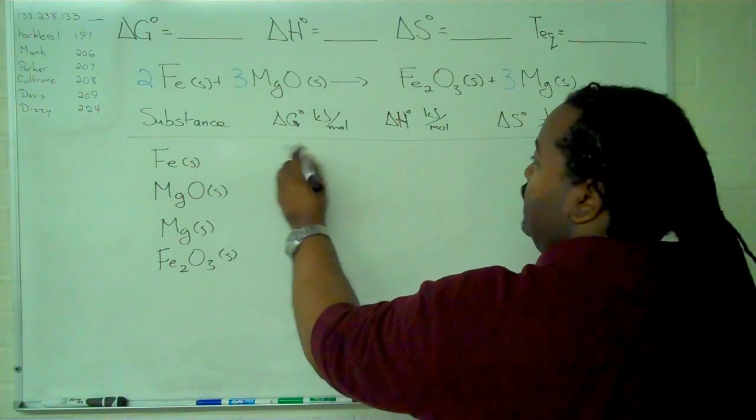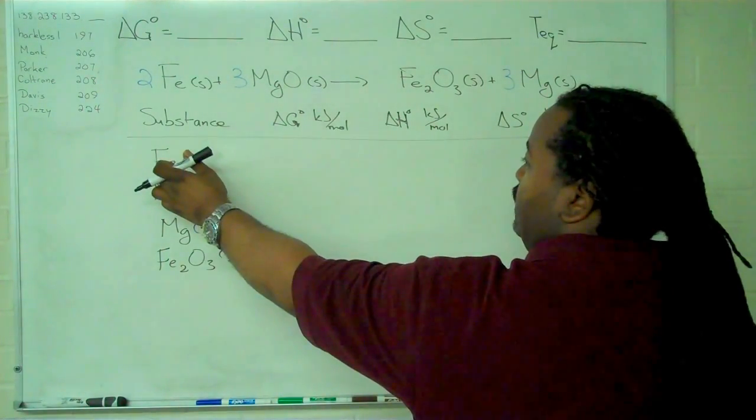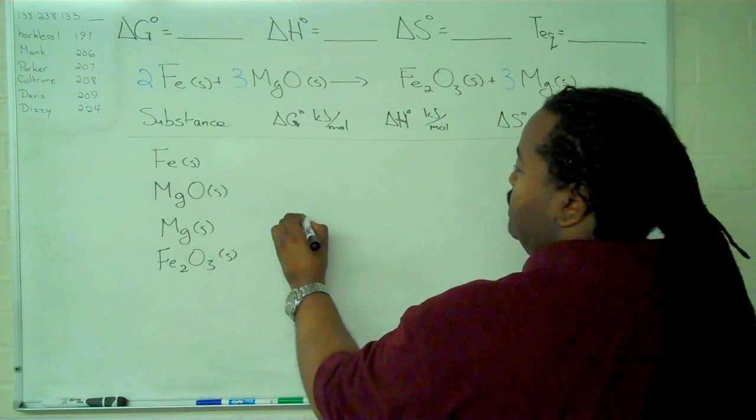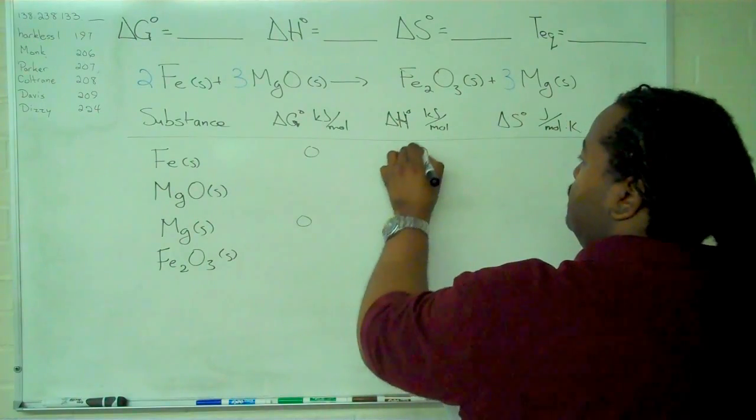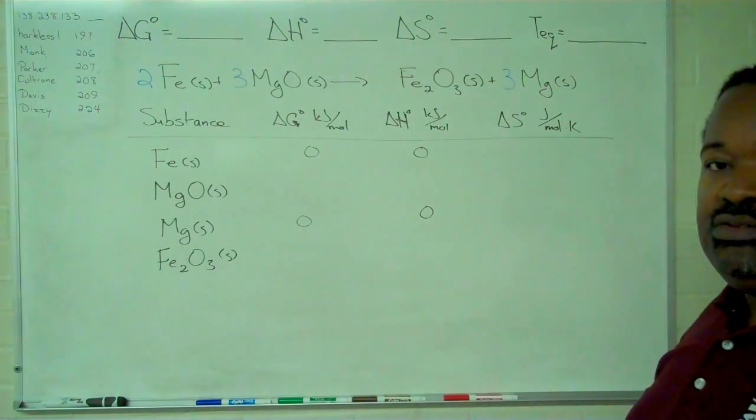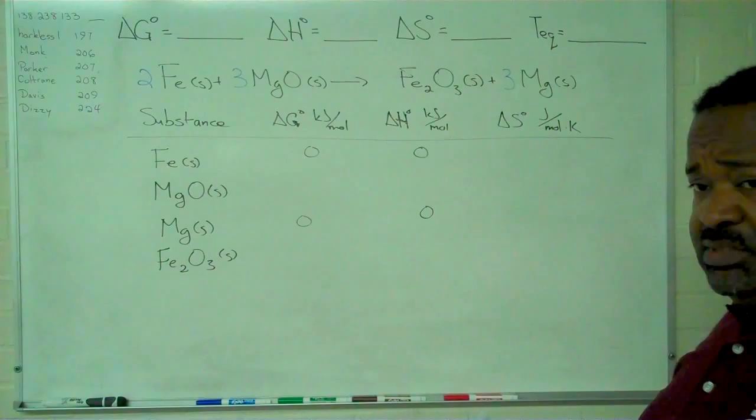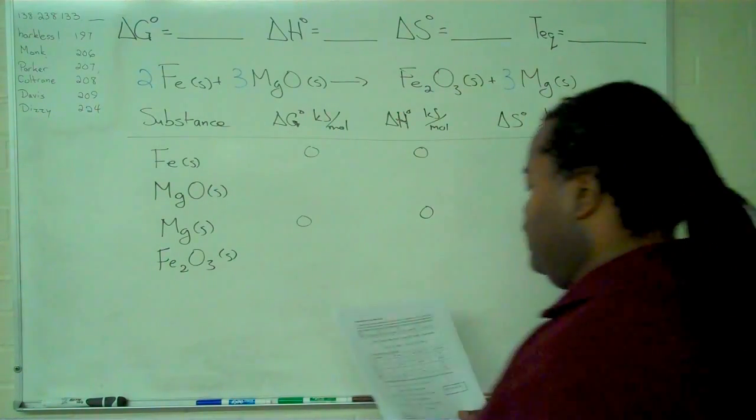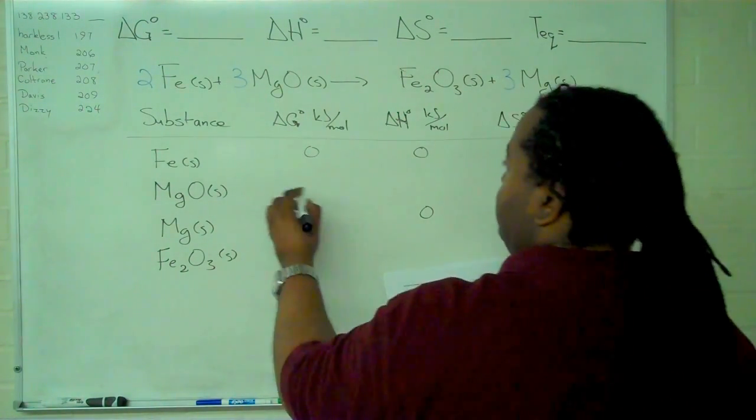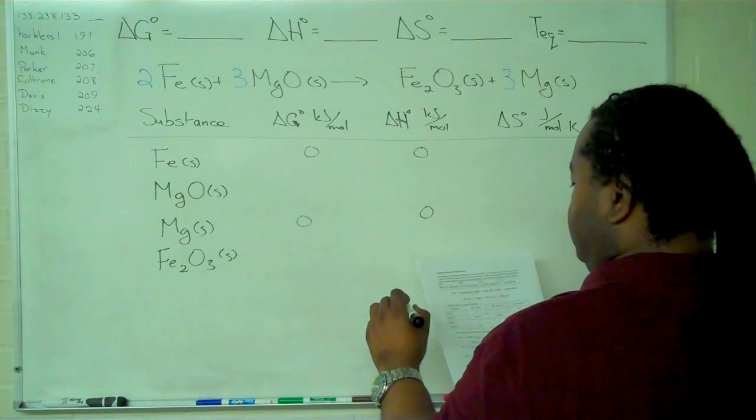So I'll go ahead and put those in. For the delta G and delta H, for solid iron and solid magnesium, we'll get 0. And that's because they're in their standard state. So the enthalpy and the Gibbs free energy are both 0.